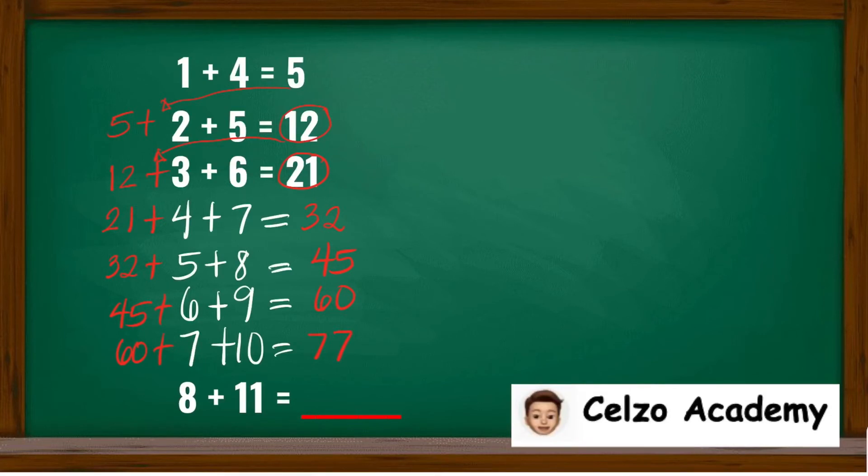For 8 plus 11, we need to add the previous answer, 77. 77 plus 8 is 85, 85 plus 11 is 96.